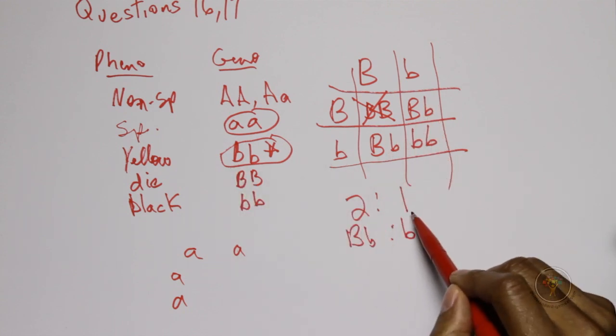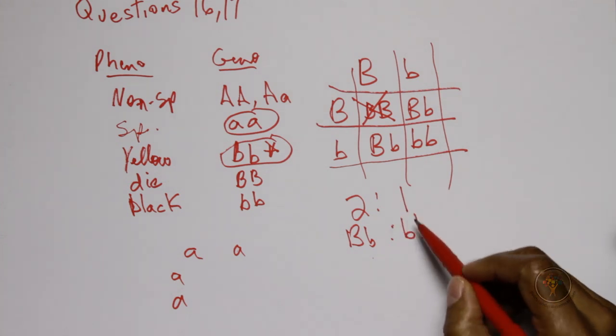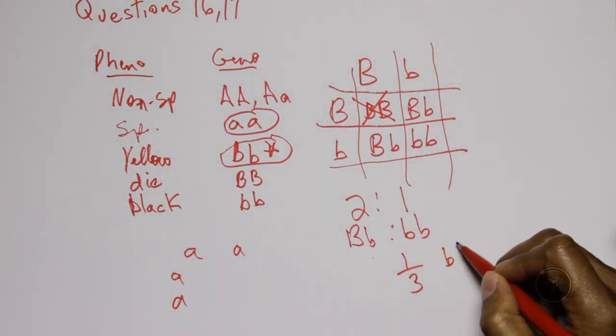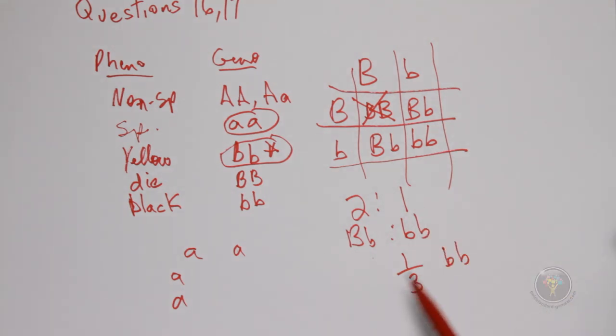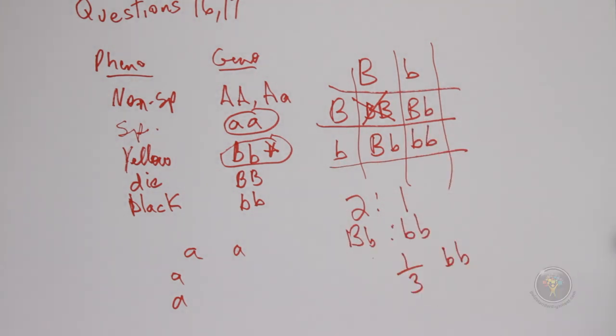But we already did that and it showed that it would produce a ratio of two to one, two Bb for two Bb. So that means that we have one third which will be bb, one out of the total of this. So that's 33 and a third percent will be black spotted. So you were able to get two answers from using the same Punnett square.